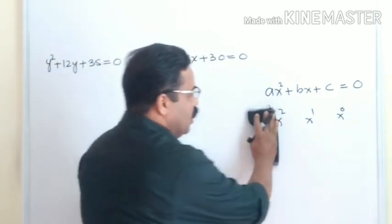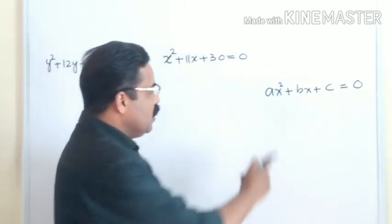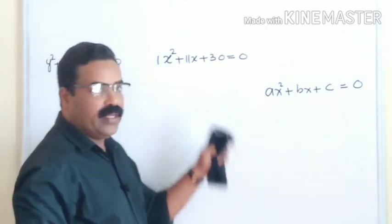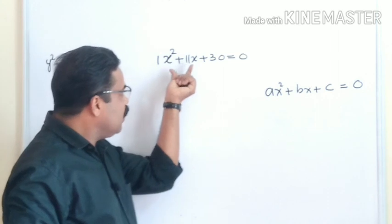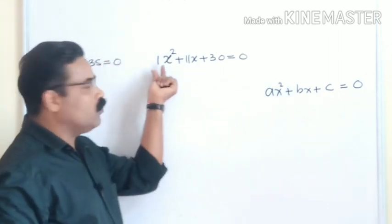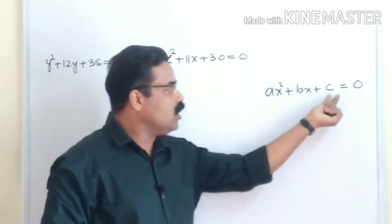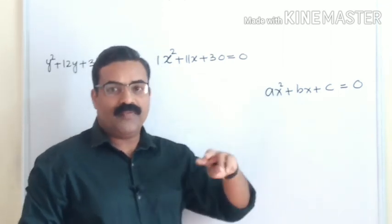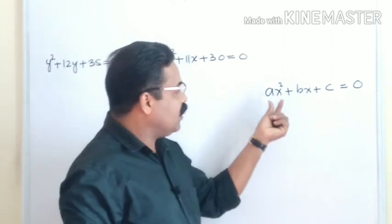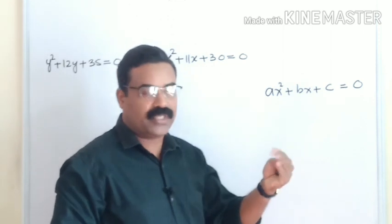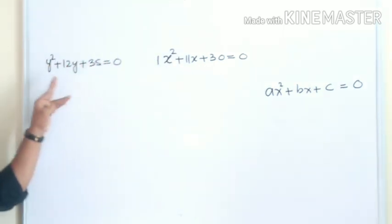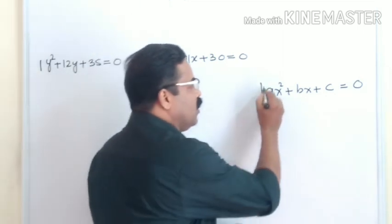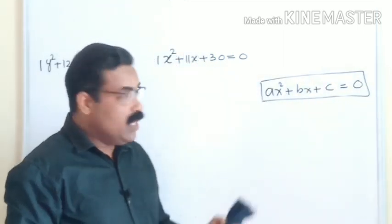When you compare the general formula with these equations, before x² there is 1 — so 1x². Comparing with the general formula, the value of a is 1, b is 11, and c is 30. Sometimes a is 1, sometimes a is any other number and we solve it differently. Here a = 1 for both equations. This is the general formula ax² + bx + c = 0 for any quadratic equation.